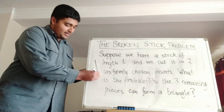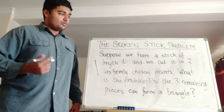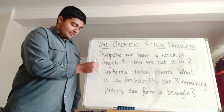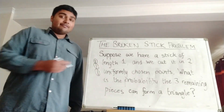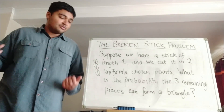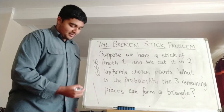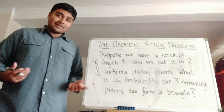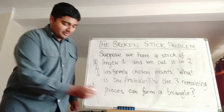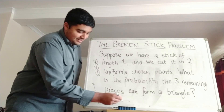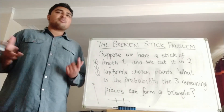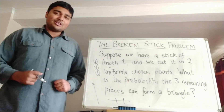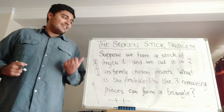So we have a stick of length 1, and we cut it at two randomly chosen points, say there and there, and we want to know what's the probability that these three pieces can form a triangle. Notice that you're not always going to be able to form a triangle — for example, if you cut it so that you have two really small pieces and one really long one, there's no way you can form a triangle. But if you cut it relatively evenly, you're going to get something that's approximately an equilateral triangle. So sometimes you can form a triangle, sometimes you can't, and we want to know what the probability is.